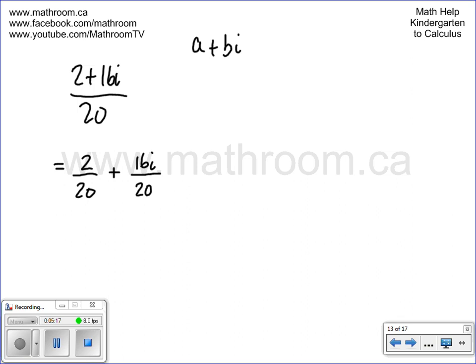We can simplify that a little bit farther. 2 over 20 is the same thing as 1 over 10, plus 16 over 20 can be simplified to 4 over 5i. And that is our final answer. 1 tenth represents a, the real part. 4 fifths i represents the imaginary part, bi.